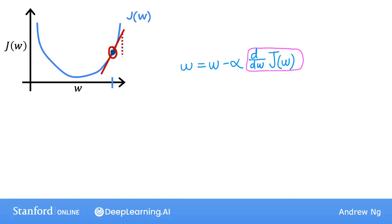And to get the slope, you can draw a little triangle like this. And if you compute the height divided by the width of this triangle, that is the slope. So, for example, the slope might be, you know, 2 over 1, for instance.